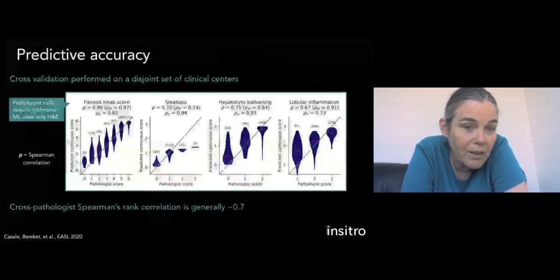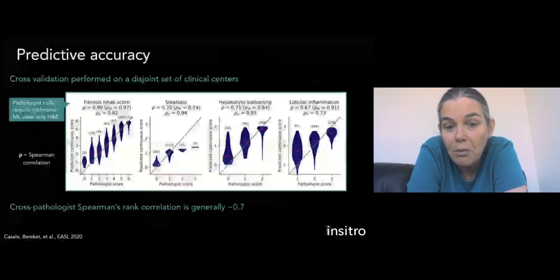Now, notably, for instance, for the fibrosis score, the correlation is 0.9. It's 0.7 for some of the others. The cross-pathologist agreement is generally 0.7. So we're actually at or beyond state-of-the-art.